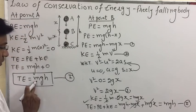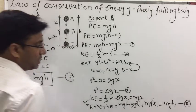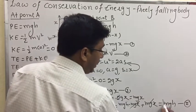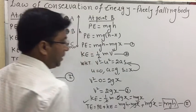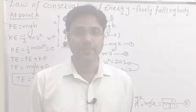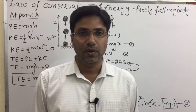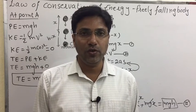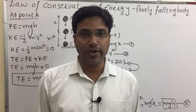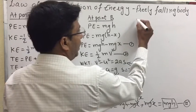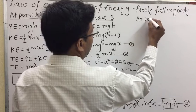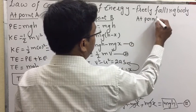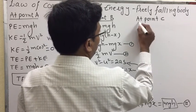Comparing equation one and equation two, total energy is mgh at point A as well as at point B. Now we find total energy at point C.